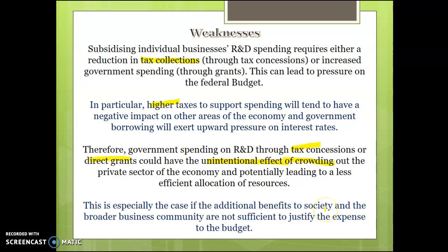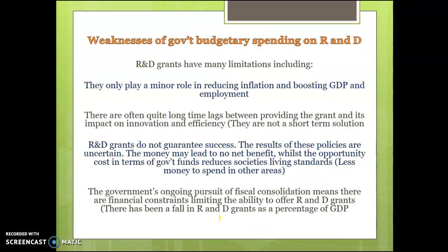This crowding out is especially the case if the additional benefits to society and the broader business community are not sufficient to justify the expense. More general limitations include that R&D only plays a minor role in reducing inflation, there is often a long time lag between providing the grant and its eventual impact, making it not a short-term solution. There's no guarantee of success, these policies are often uncertain, there's a large opportunity cost as money must be diverted from other areas, and it can make it hard to achieve fiscal consolidation.